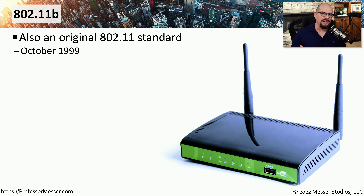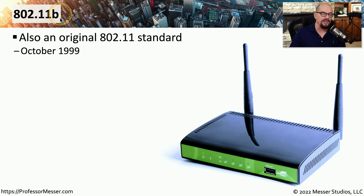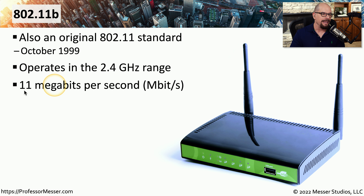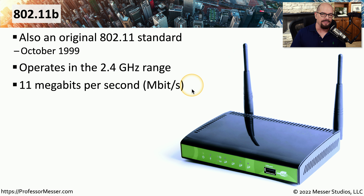At about the same time that 802.11a was released, the IEEE also finalized the 802.11b standard. This is not an upgrade to A — instead, it is a completely different standard that operates with different frequencies and different speeds. 802.11b operates in the 2.4 gigahertz range, and its maximum speed is 11 megabits per second, which is certainly much slower than the 54 megabits per second available with 802.11a.